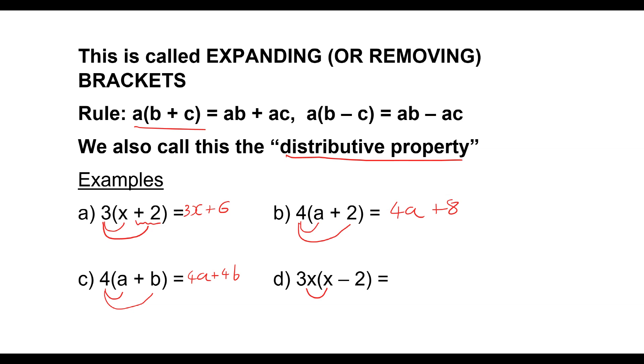Finally, in D, 3 times X is 3X squared, and then 3X times minus 2 is going to be minus 6X. So we actually have 3X squared, take away 6X.